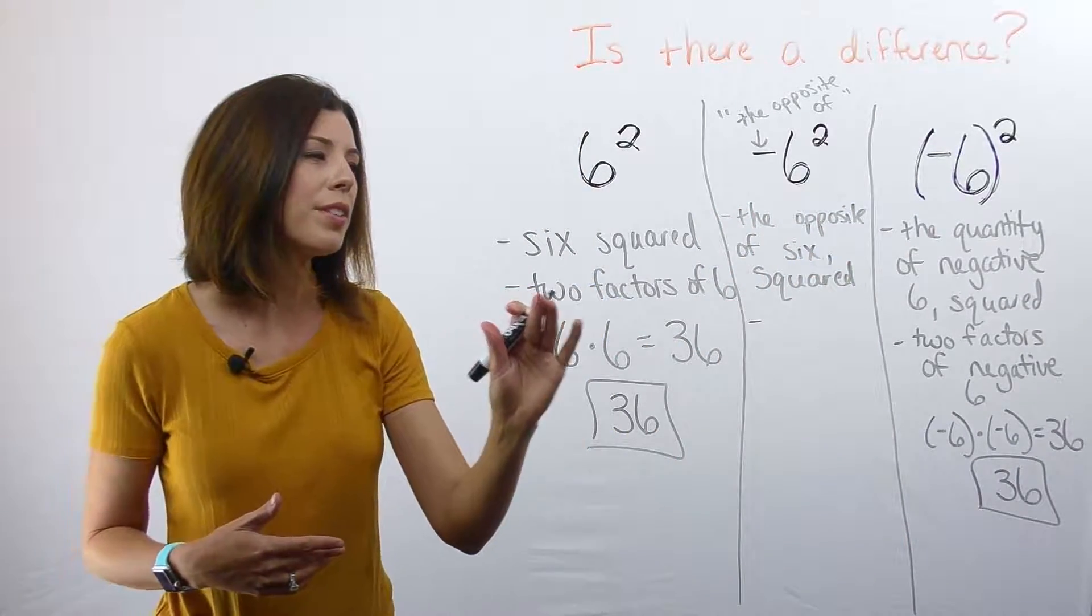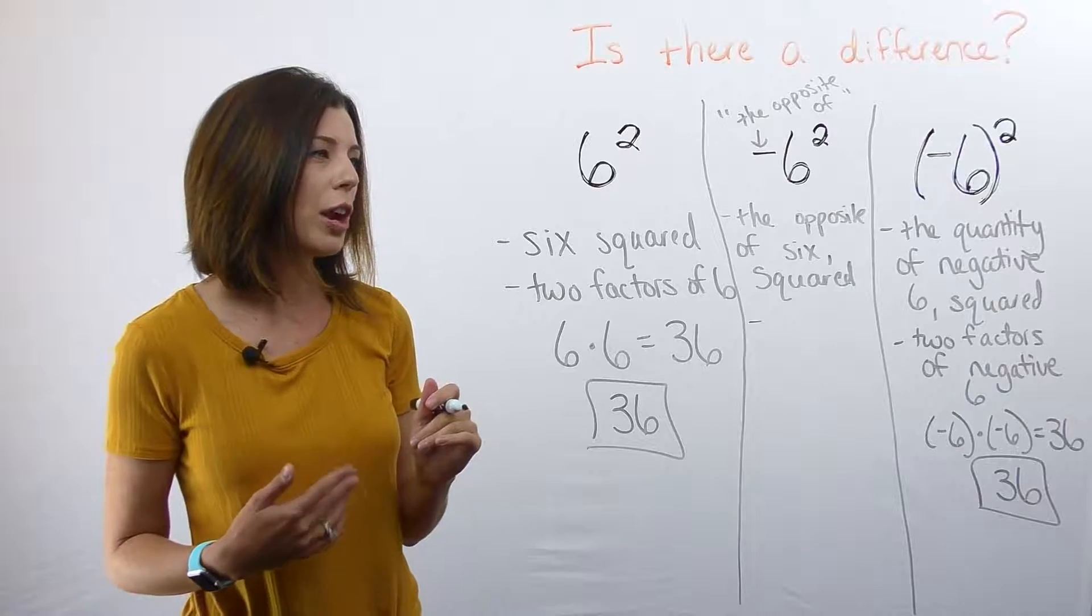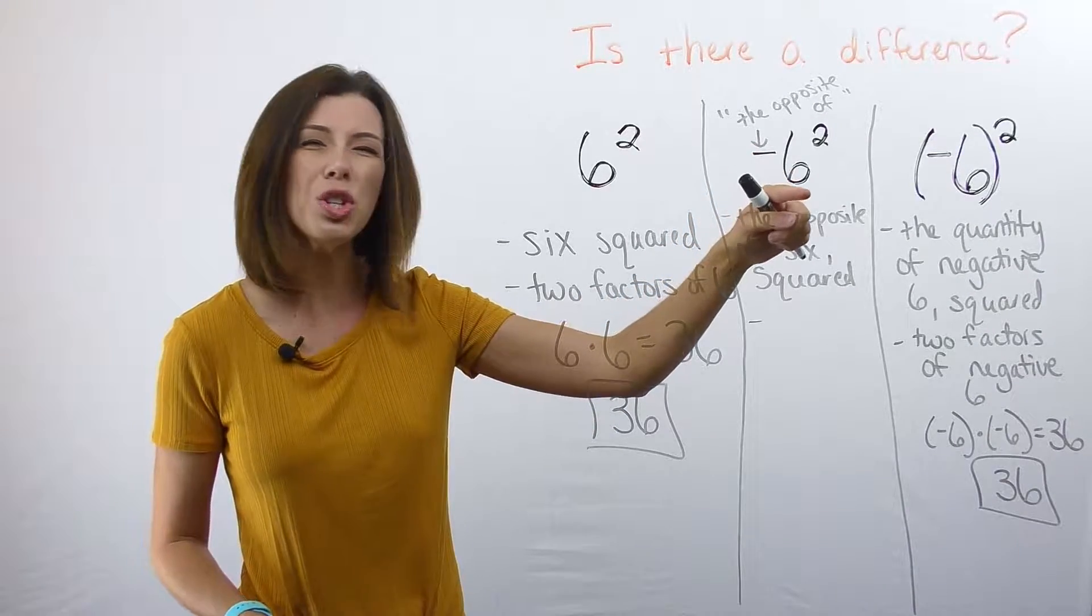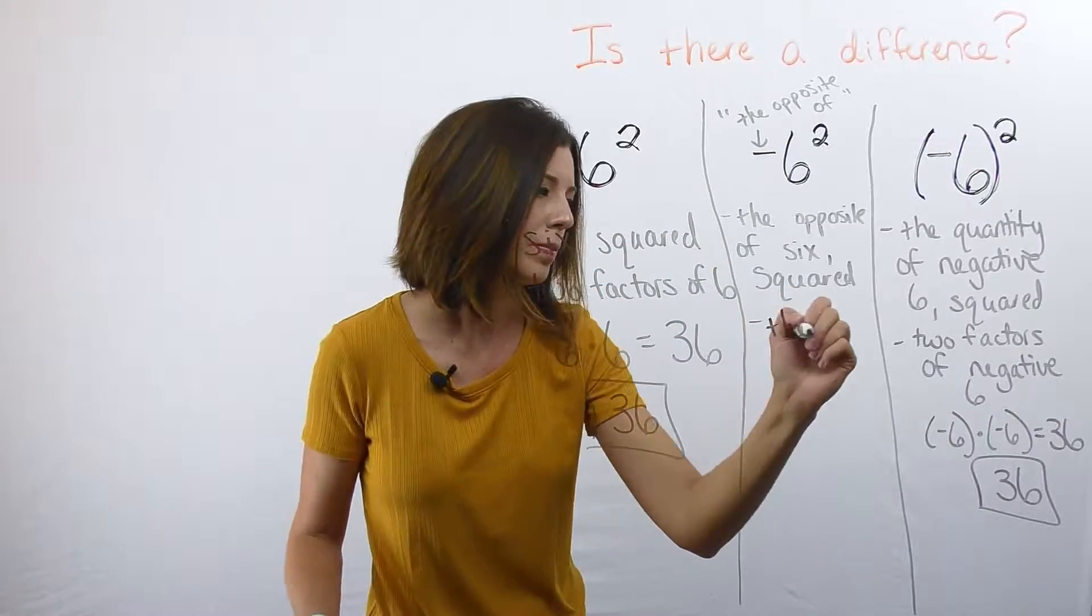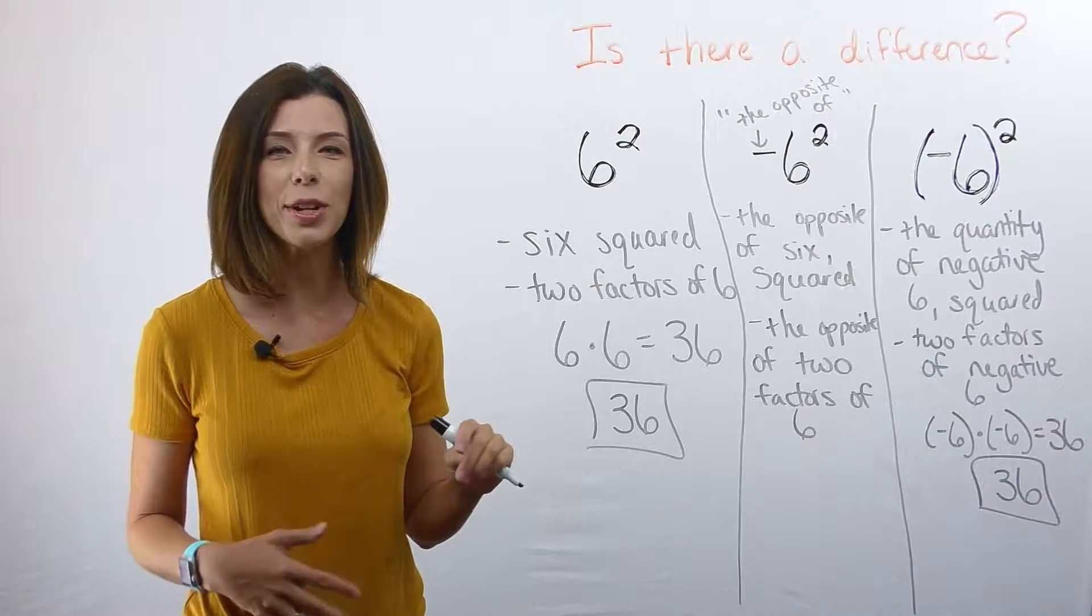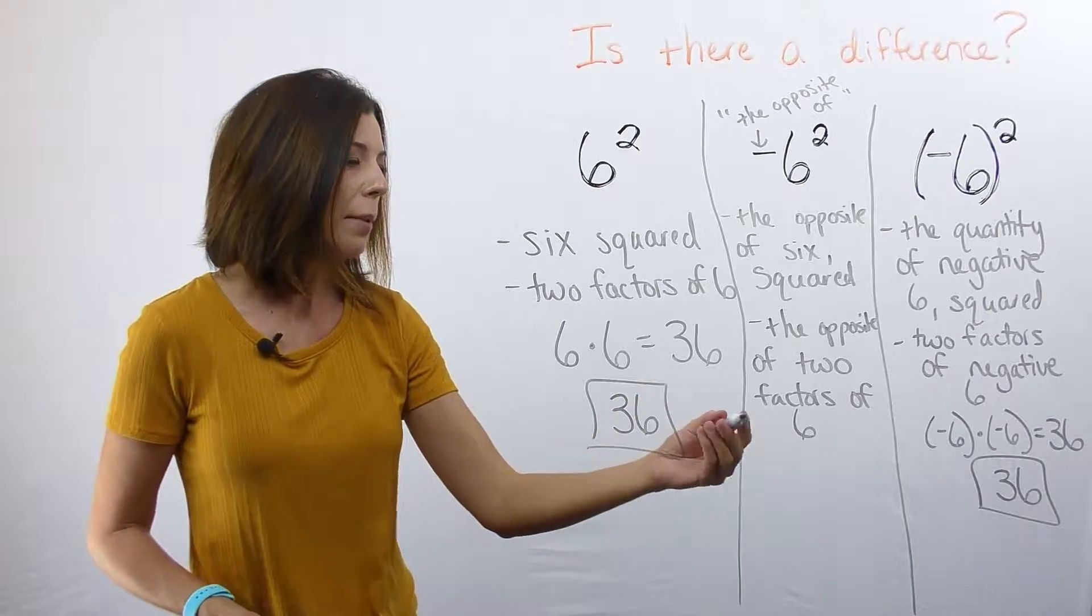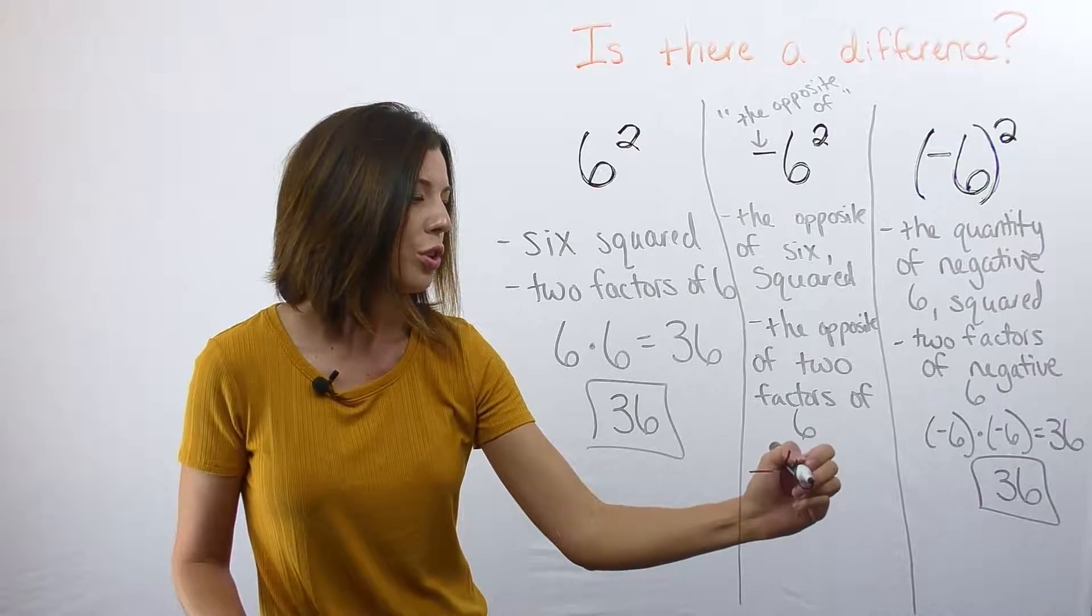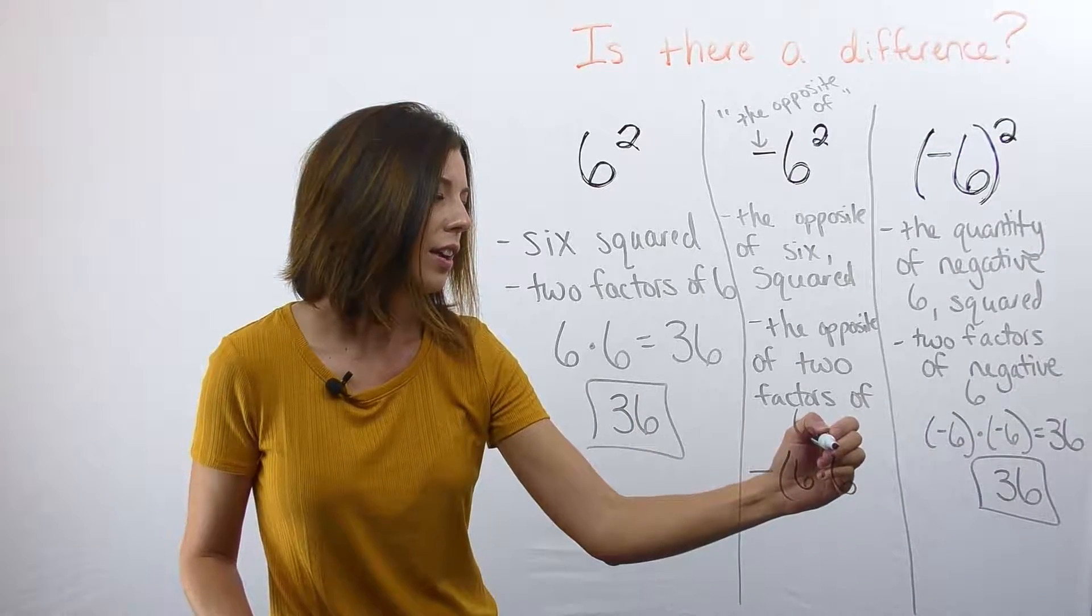When I look in terms of my factor language, I'm actually going to say this is really the opposite of two factors of six. Now, when I go to write this as an equation, I'm going to write it a little bit different. I'm going to write it as the opposite of two factors of six.